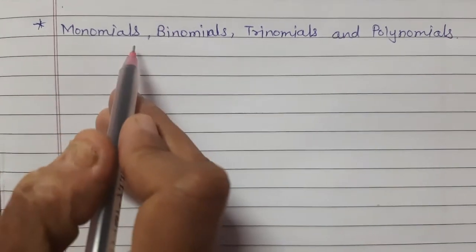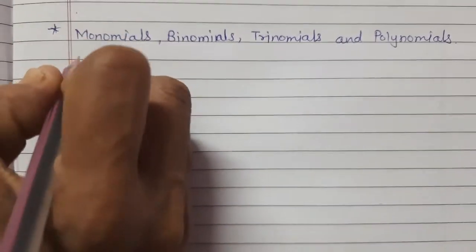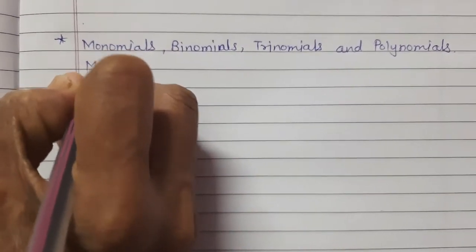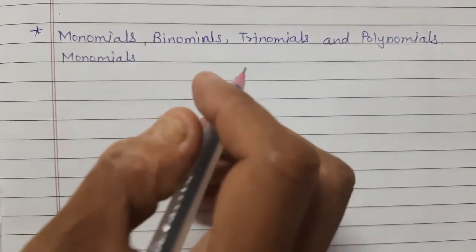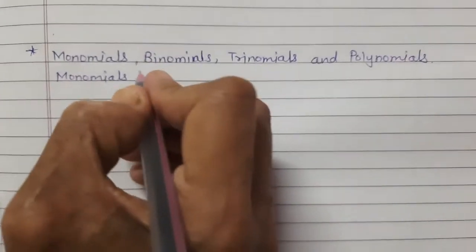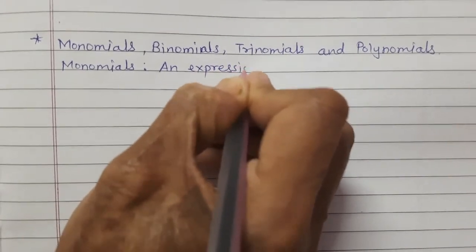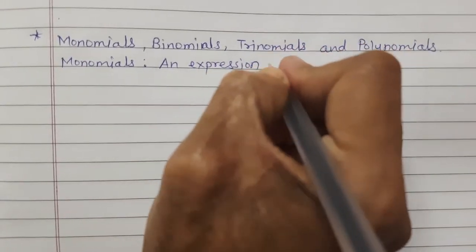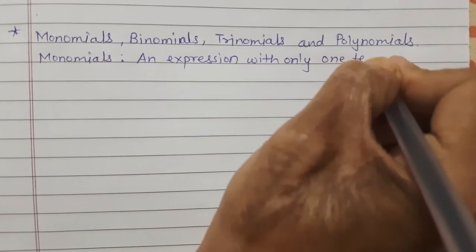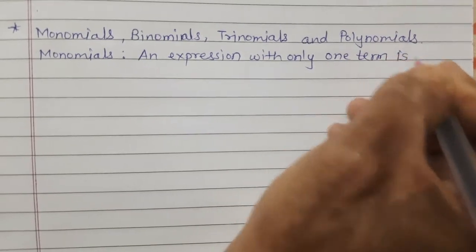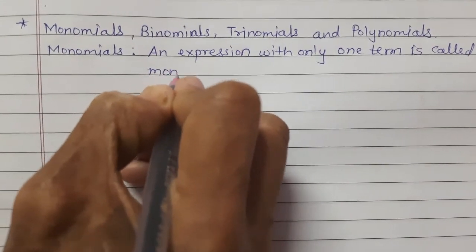Let's learn now monomials, binomials, trinomials, and polynomials. Monomials: an expression with only one term is called a monomial.